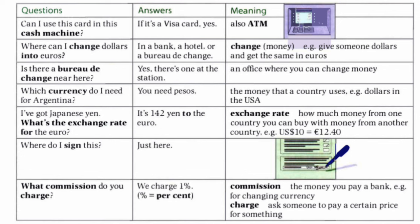Second one: Where can I change dollars into euros? Answer: in a bank, a hotel, or bureau de change. Change means give someone dollars and get the same in euros — like change the money. You give dollars and you receive euros, or you give dollars and you receive lire.